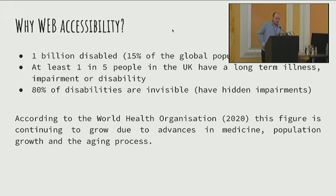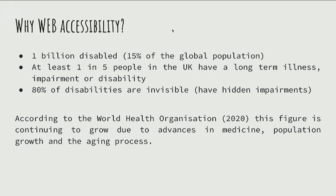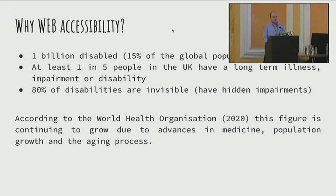There's a billion people on the planet who have some form of disability. A lot of these disabilities — 80% of them — are invisible. So we're talking about a large chunk of the population. And according to the World Health Organization, this number is going to continue to grow, because we're all getting older and medicine's improving. So effectively, it will all affect us at some point in our lives.